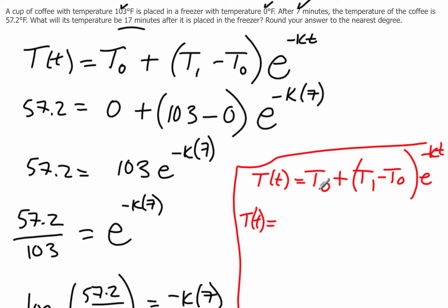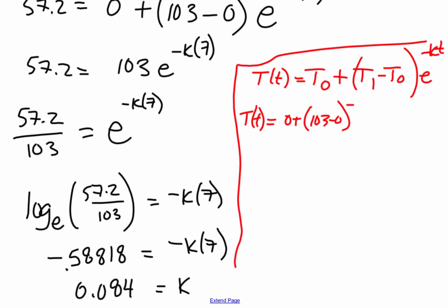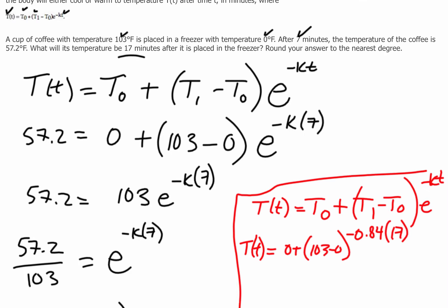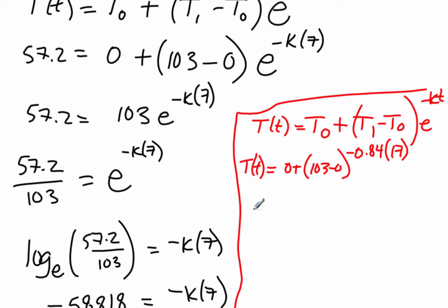And temperature of surroundings is 0 plus it's going in at 103, so 103 minus 0 to the negative. Now k, I just figured out, 0.084. And the time, they say, is 17 minutes. So now all I'll have to do is figure that out.